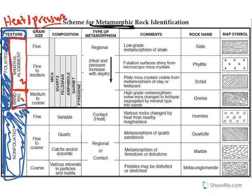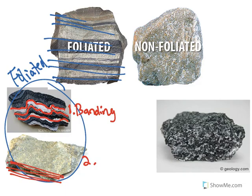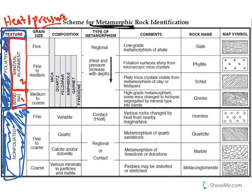Other times the layers are flat. When we're dealing with the flat types that look like you can peel them off, we're dealing with mineral alignment. So mineral alignment — think flat layers. Banding — think squiggly. Both are considered foliated.